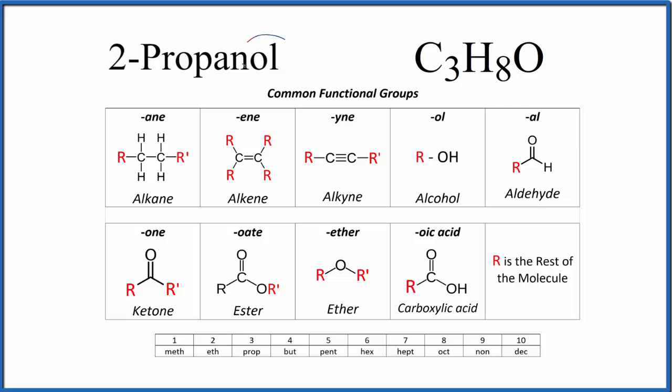So first off, OL, when we see that it ends in this OL here, that means we have an alcohol. So we're gonna have an OH group attached to the rest of the molecule. Here that'll be the carbon atoms. So we know we have this OL. This AN, that's from an alkane.